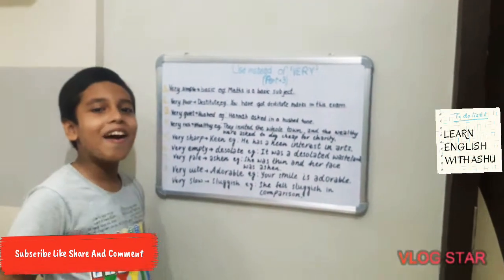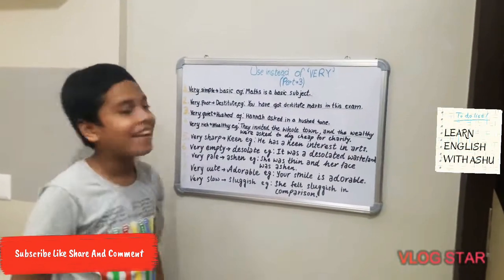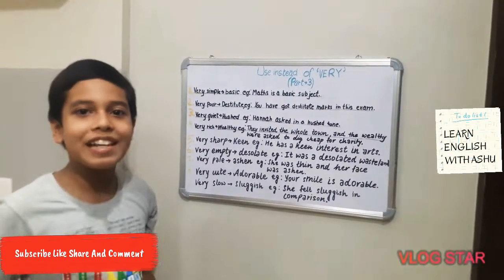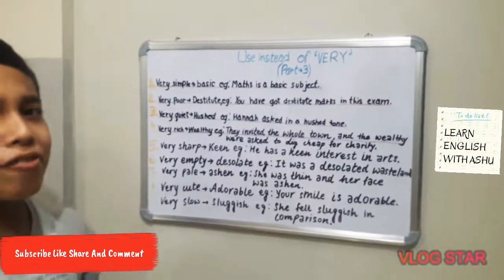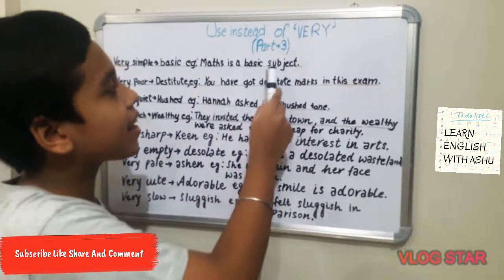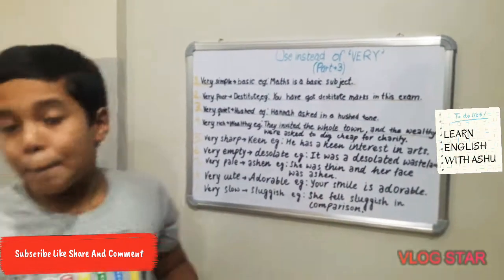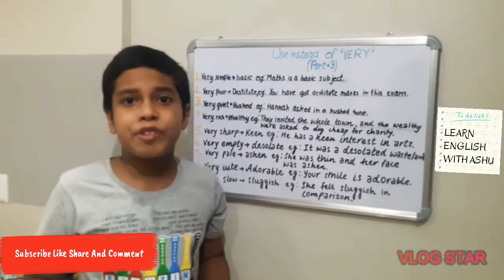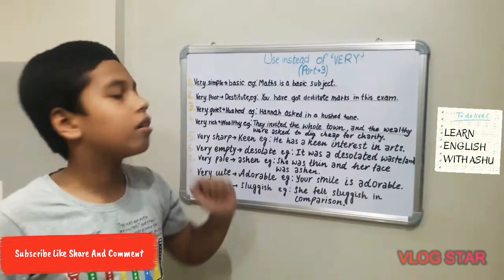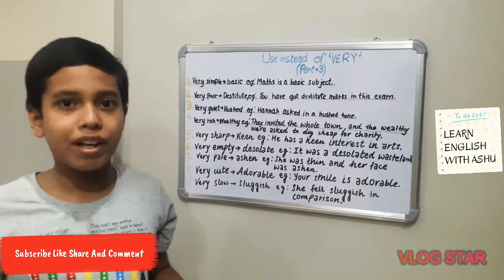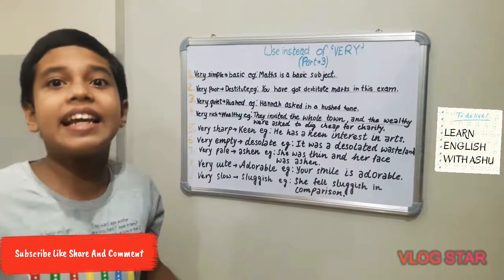Our first word is 'very simple.' Instead of very simple, we can say 'basic.' For example, maths is a basic subject. Many students like maths because it's very basic — it means it's very easy.